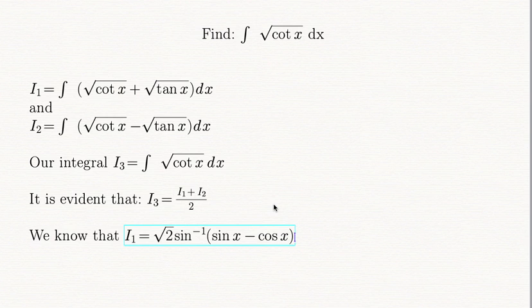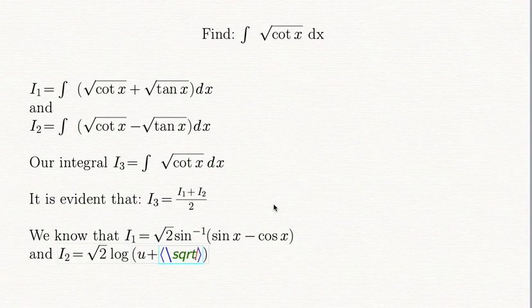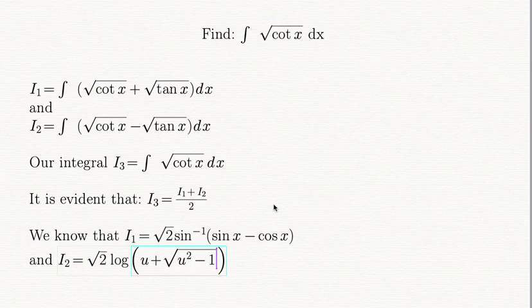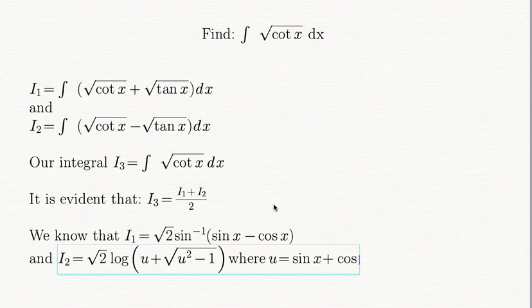So that is i1 and i2 was equal to square root 2, what was that? It had a log. Log of u plus square root of u squared minus 1, where u is equal to sin x plus cos x.